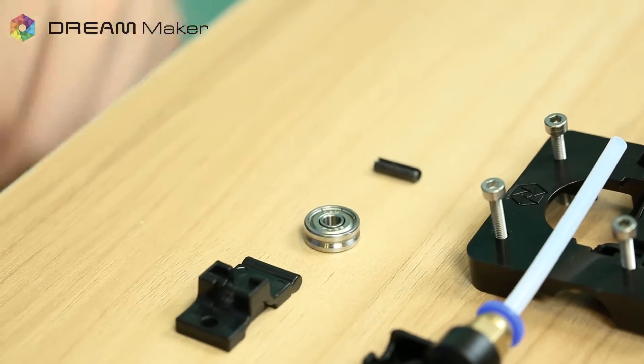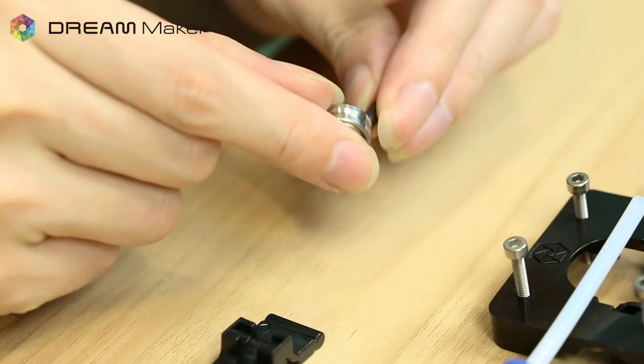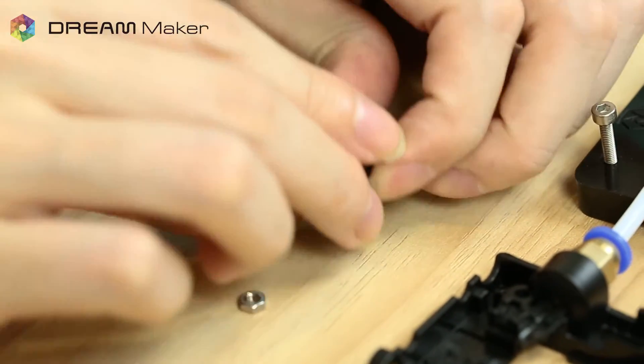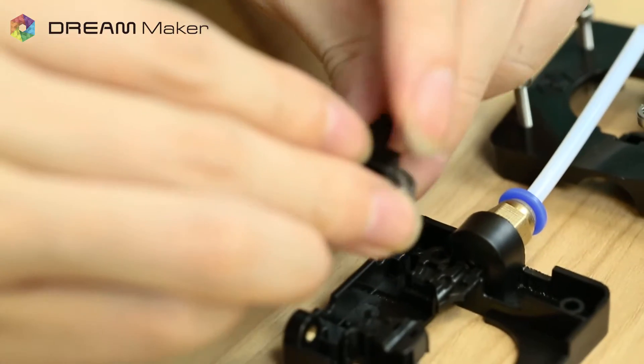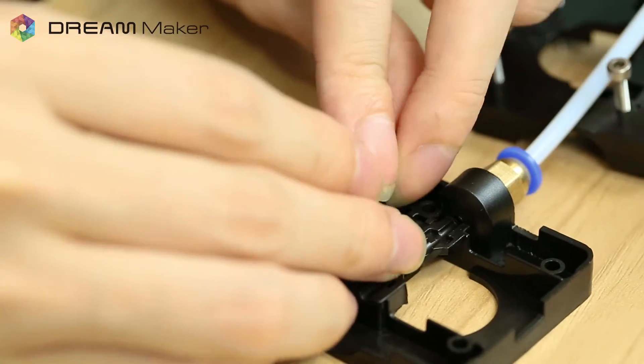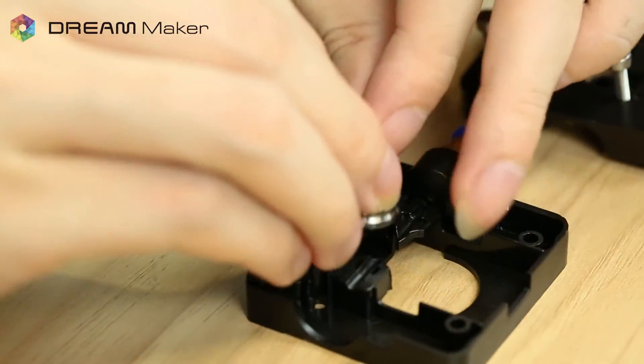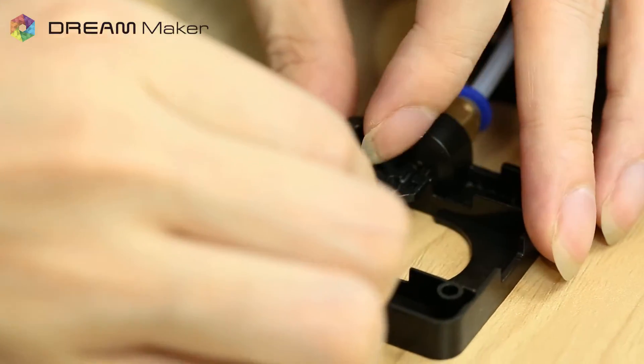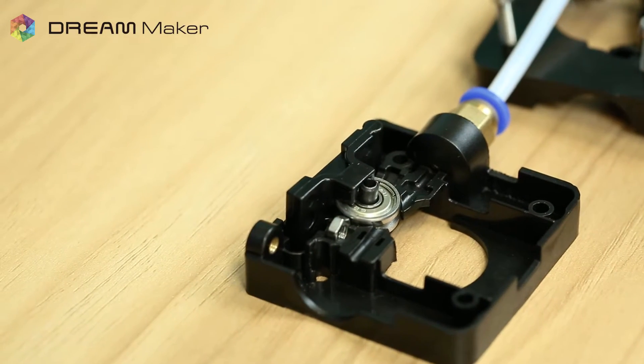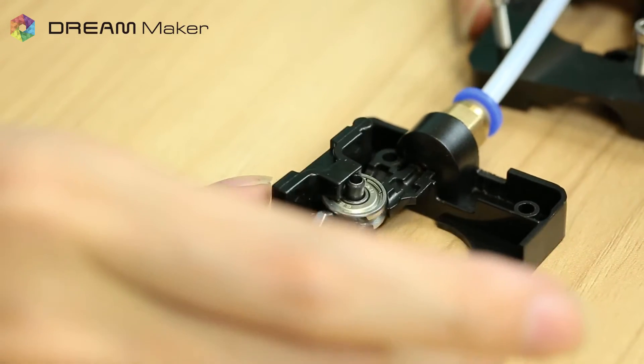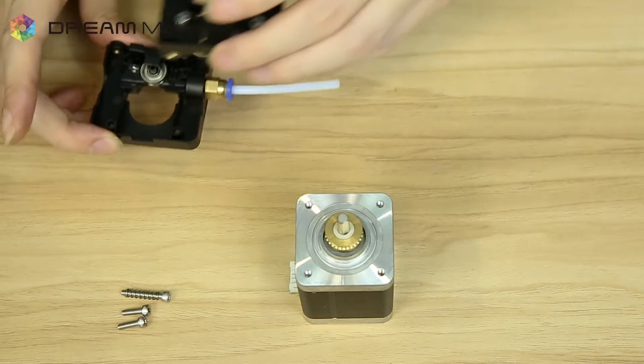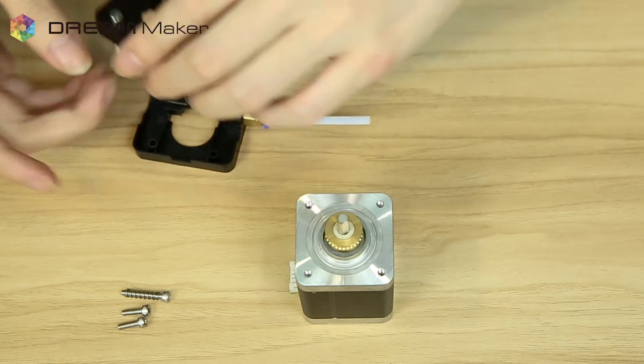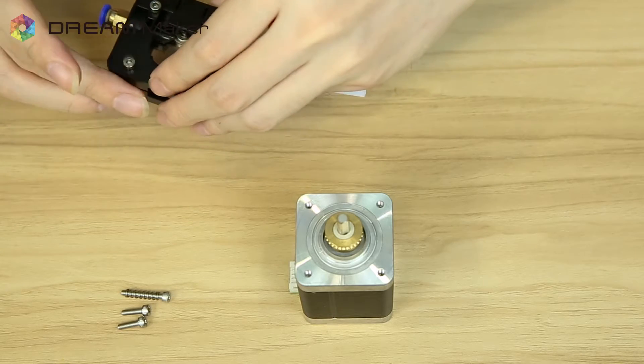To reassemble the extruder, leave the shaft through the bearing and put the bearing onto the mount. Then place the mount onto the extruder and place the entry nut. Now put the top cover onto the base.